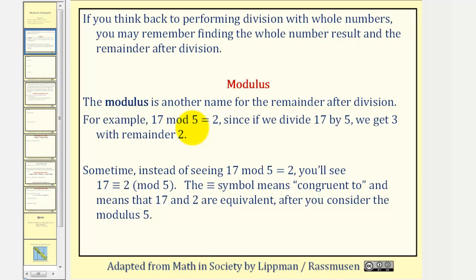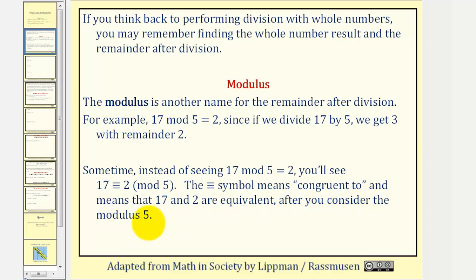Sometimes, instead of seeing 17 mod five equals two, you'll see it written like this, where we say 17 is congruent to two mod five, which means 17 and two are equivalent after you consider the modulus five.